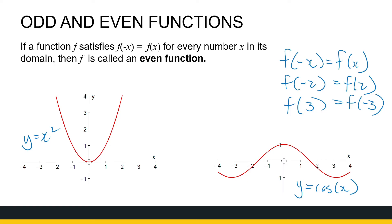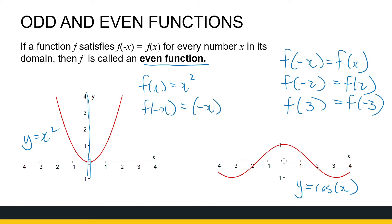Graphically, what we notice for an even function is that it's symmetrical around the y-axis. Let's test this function according to the definition. If f of x is equal to x squared, what would f of minus x be? That would be minus x, all squared. If I square minus x, I get x squared, which is just f of x. So x squared is confirmed to be an even function.